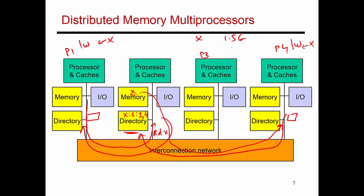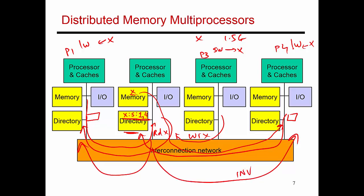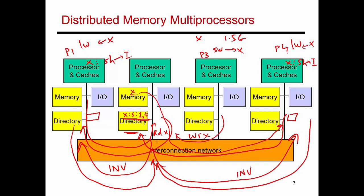Now P3 comes along and wants to write into x. It does a store word into x, looks up its cache, has a cache miss, and a request arrives here saying it's trying to write into x. You get the value of x, but before you can give write permissions to P3, you need to make sure that all other cache copies have been invalidated. Thankfully, the directory knows exactly where the shared copies are sitting, so instead of doing a broadcast, you send a point-to-point message to node 1 and to node 4 saying they need to invalidate their cache copy of x. X is sitting in shared state in both those caches, so those cache copies are now invalidated — they move from shared state to invalid state. And now they have to let the directory know that they have performed this invalidation, so they send back an acknowledgement saying they have performed that invalidation.